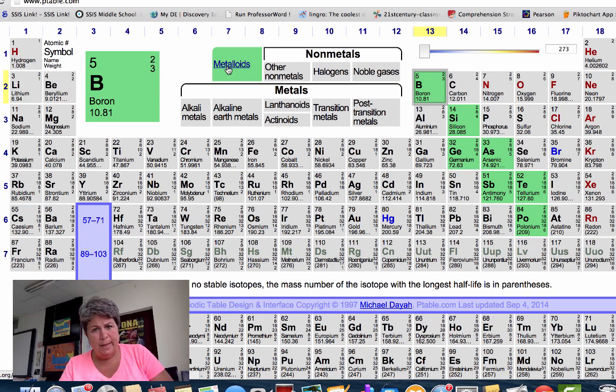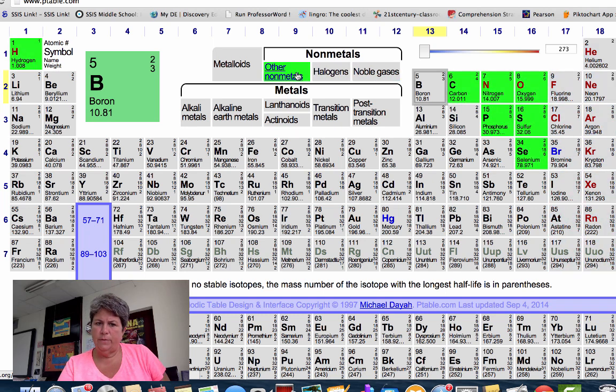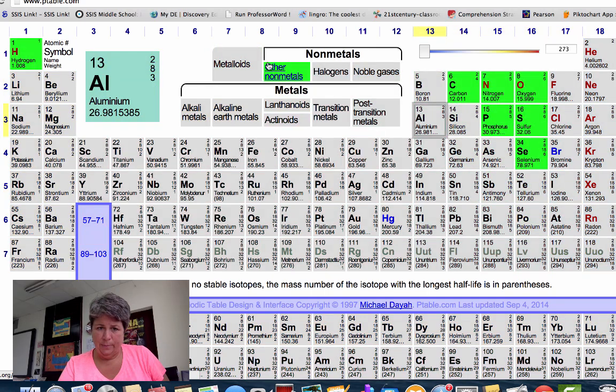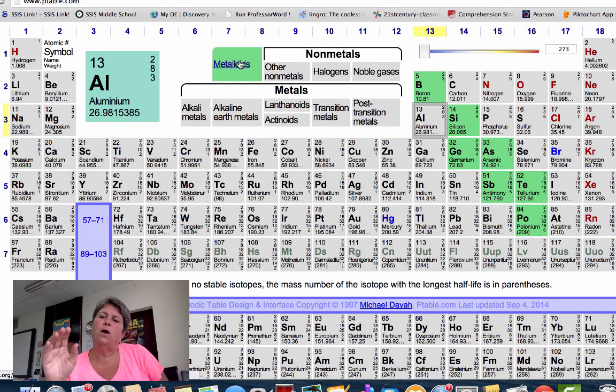And then covalent bonding involves only nonmetals and nonmetals. So all these guys over here, the other nonmetals, halogens, noble gases—everything over to the right of the staircase, when they bond with other nonmetals, so nonmetal and nonmetal, that's a covalent bond.